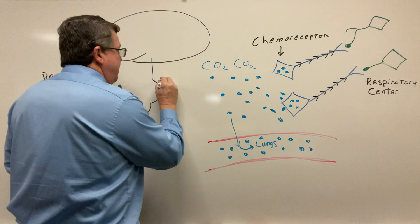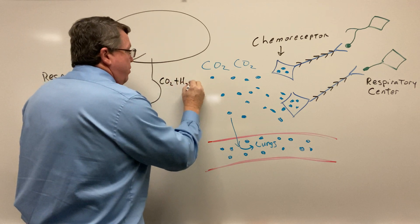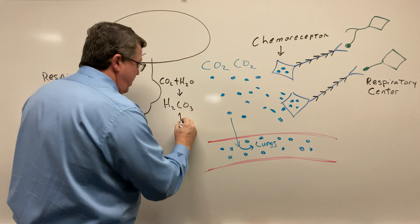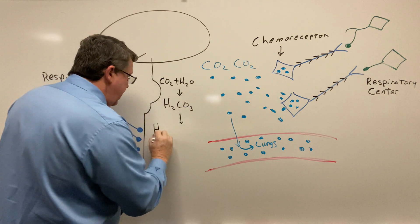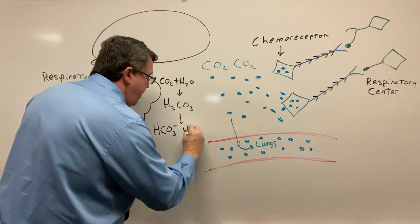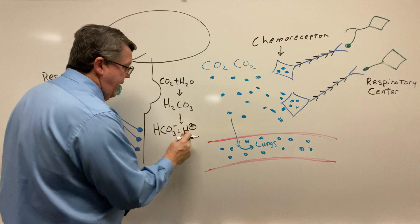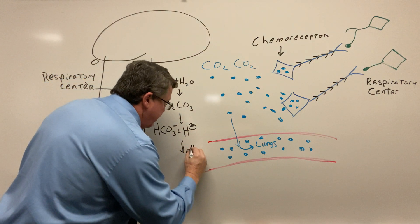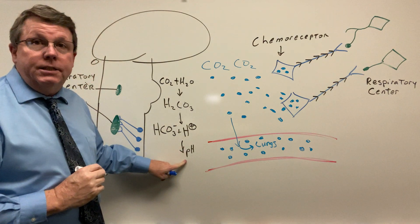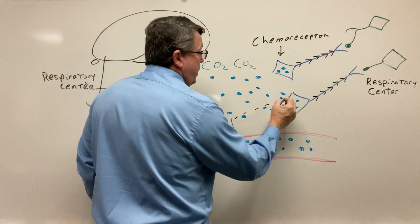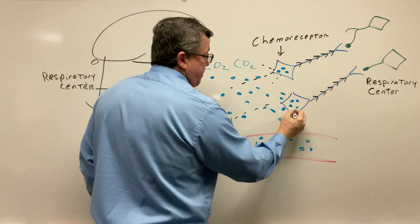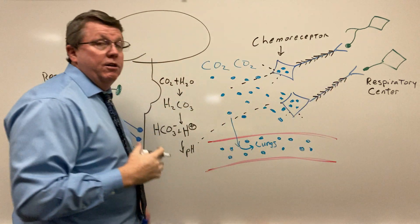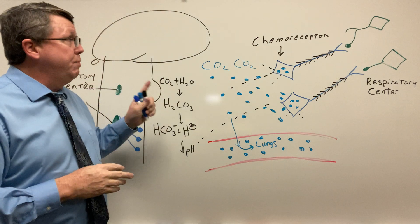The other thing to remember about carbon dioxide is that it has a relationship with water. Carbon dioxide bonds with water to become H2CO3 briefly, and then it becomes HCO3 minus and H plus. So we're also going to start to get a buildup of hydrogen ions. As I get a buildup of hydrogen ions, I decrease the pH. As I decrease the pH, that's also going to increase the stimulation of these chemoreceptors and increase the amount of signals getting to the respiratory center, so the respiratory center can take action. That's the central chemoreceptor.